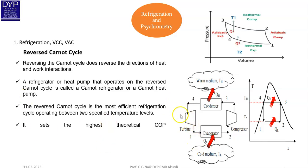On the pressure-volume diagram of the Reverse Carnot Cycle: process 1 to 2 is adiabatic compression; process 2 to 3 is isothermal compression; process 3 to 4 is adiabatic expansion; and process 4 to 1 is isothermal expansion. I hope you understand this.